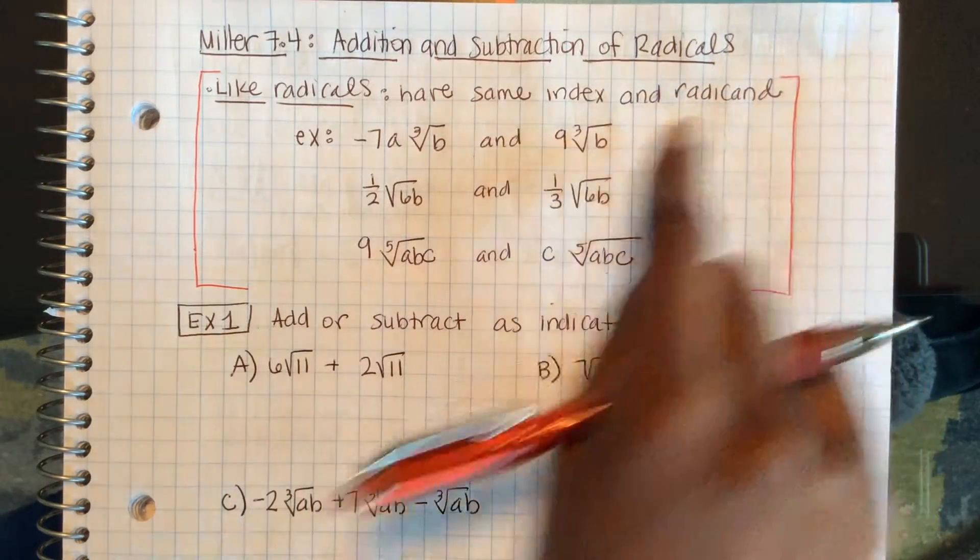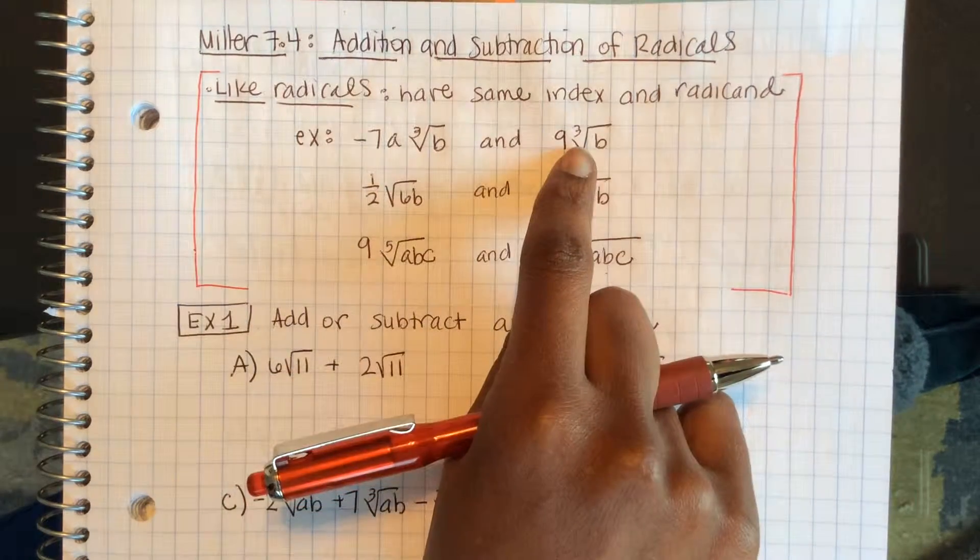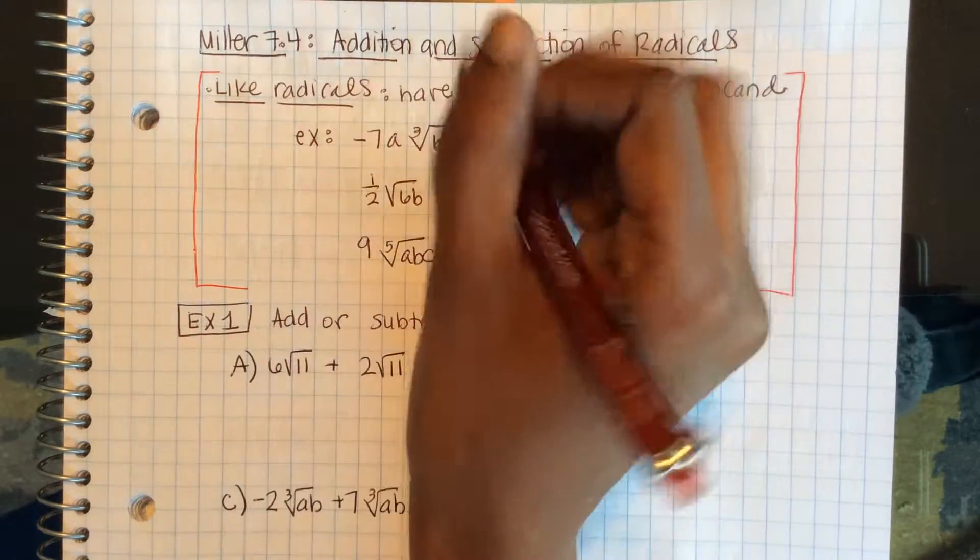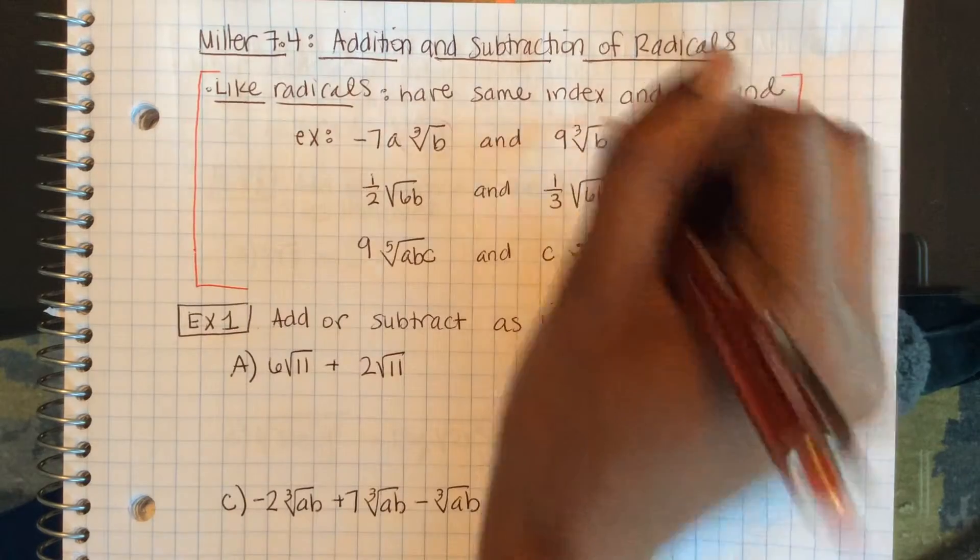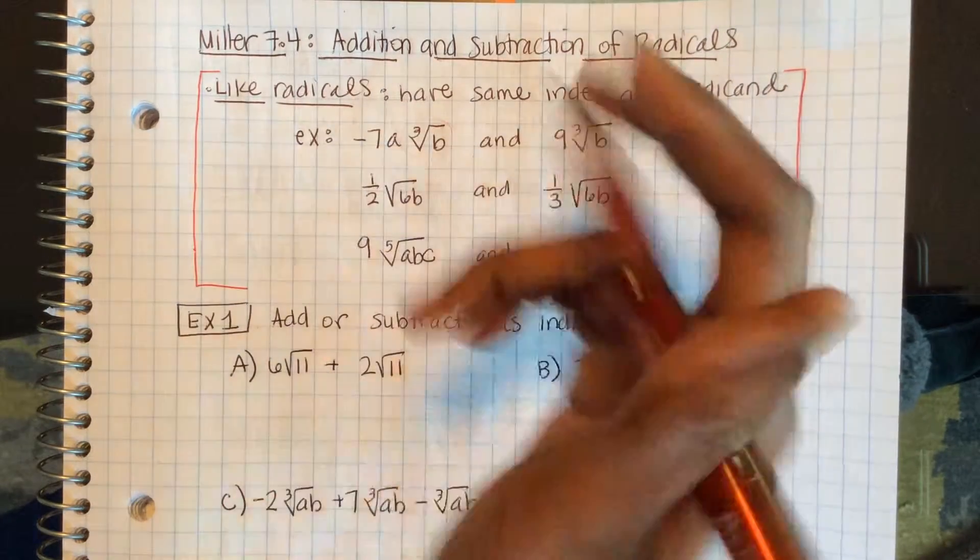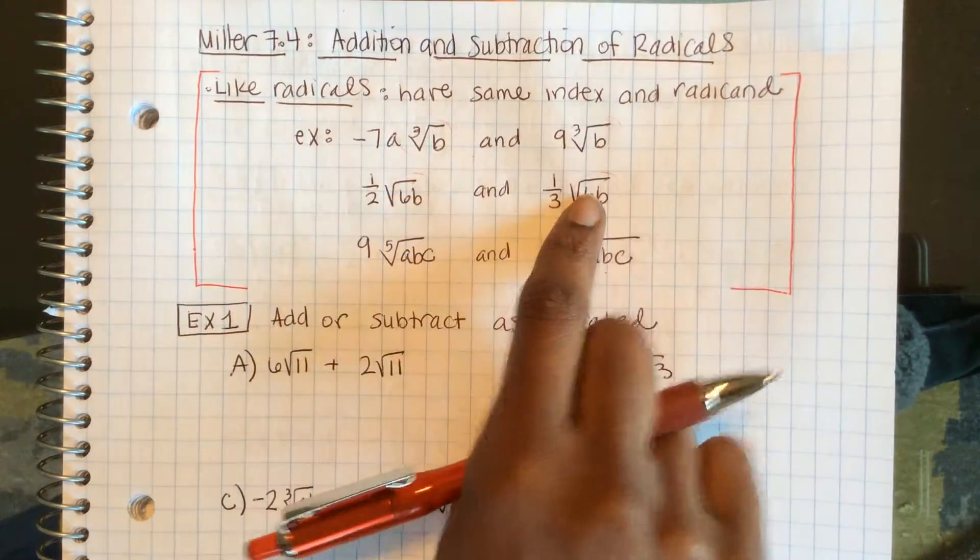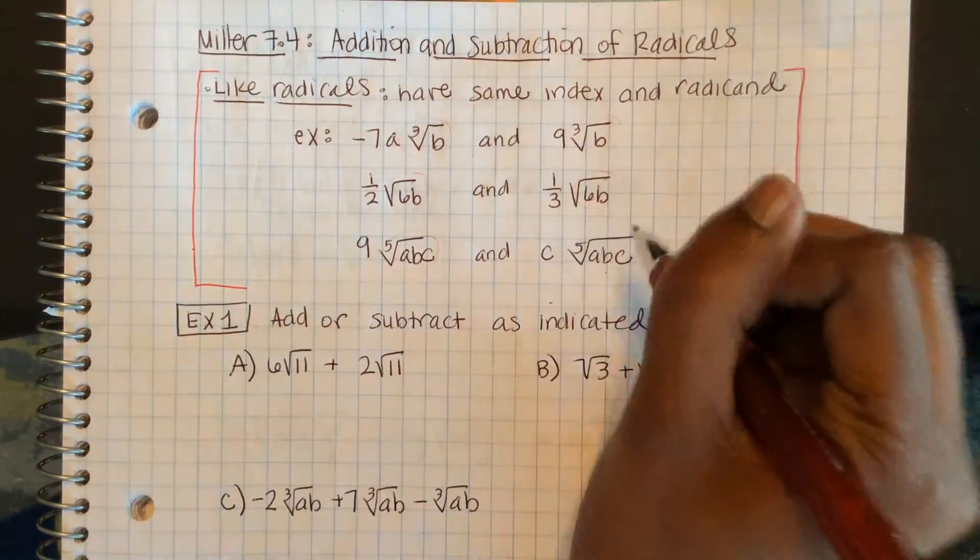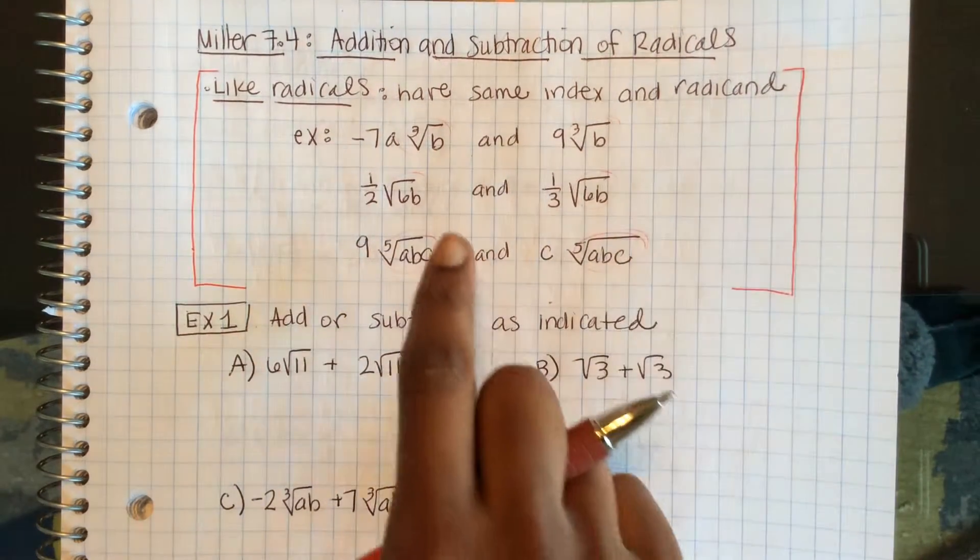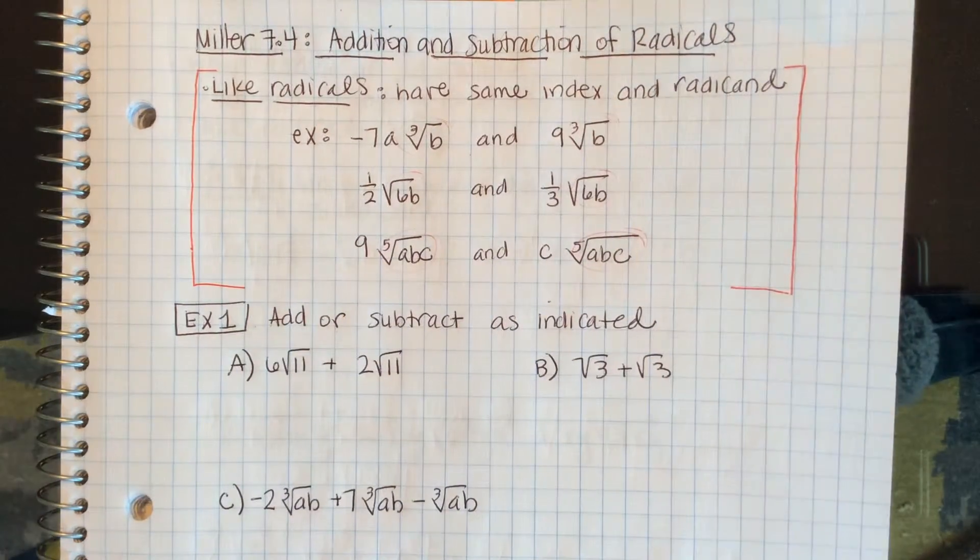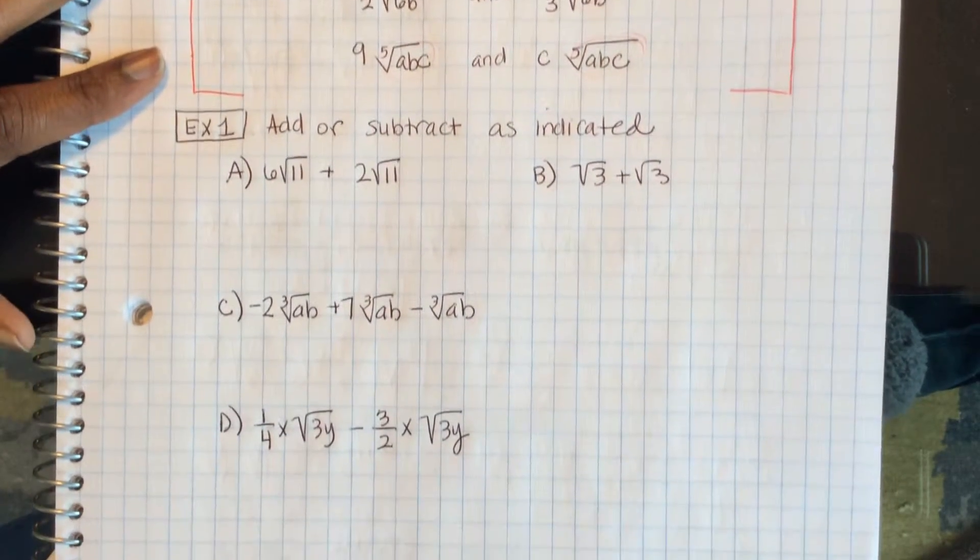Here are a couple examples of like radicals: cube root of b and cube root of b, these are like radicals. Square root of 6b, square root of 6b, like radicals. Fifth root of abc, fifth root of abc, these are like radicals.